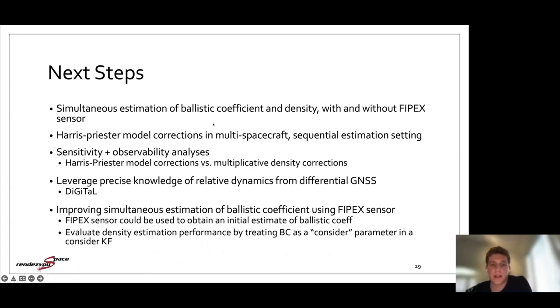And this would also lead to the simultaneous estimation of ballistic coefficient and density with and without a five-pack sensor. So the five-pack sensor lets us get better measurements, but the ultimate goal is to achieve this just with relative accelerometry. Another thing I want to investigate is using the Harris-Priester model corrections that I mentioned earlier during one of the literature review sections. And that was done in a least squares estimation setting. And so it doesn't really have statistical analysis besides just them comparing it to whatever they set the ground truth to. And when they were running their simulations, they assumed that the ground truth also used the Harris-Priester model just with some constant offset. So they were able to get really accurate results, but didn't really show how accurate those results would be if they were trying to fit the Harris-Priester model to another density model.